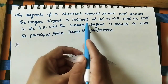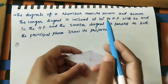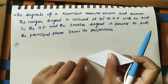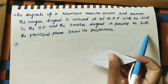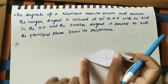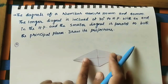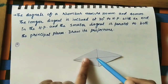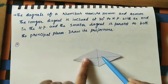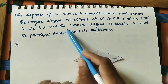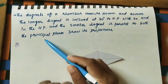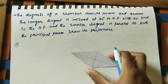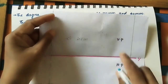The longer diagonal is inclined at 30 degrees to the HP with one end in the HP. As discussed in previous classes, if one end is in the HP, you assume the plane is in the horizontal plane. The smaller diagonal is parallel to both the principal planes.